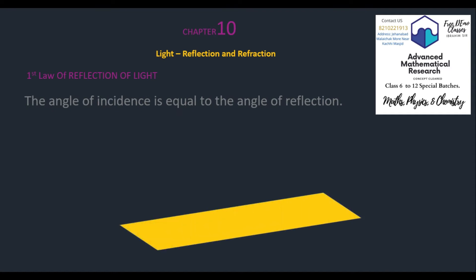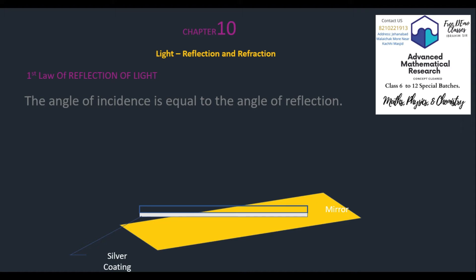Let's draw a plane mirror. There is a silver coating just beneath the mirror. An incident ray is falling onto this mirror. The angle of the incident ray is measured with respect to the normal to the mirror. The normal means perpendicular to the mirror, making 90 degrees with it. The incident ray makes an angle theta with respect to this normal.